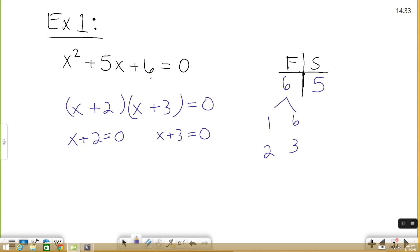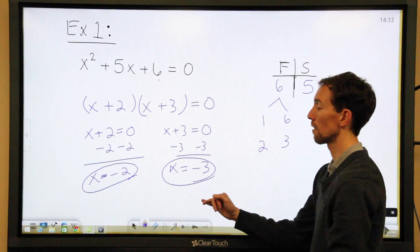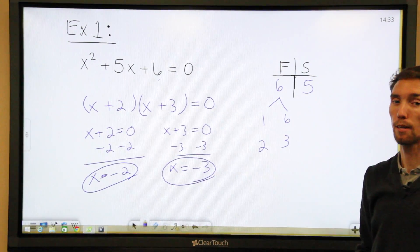So on the left we can subtract 2 from both sides, and on the right we can subtract 3 from both sides. And on the left we get x = -2, and on the right we get x = -3. So these are the two solutions to this example one.